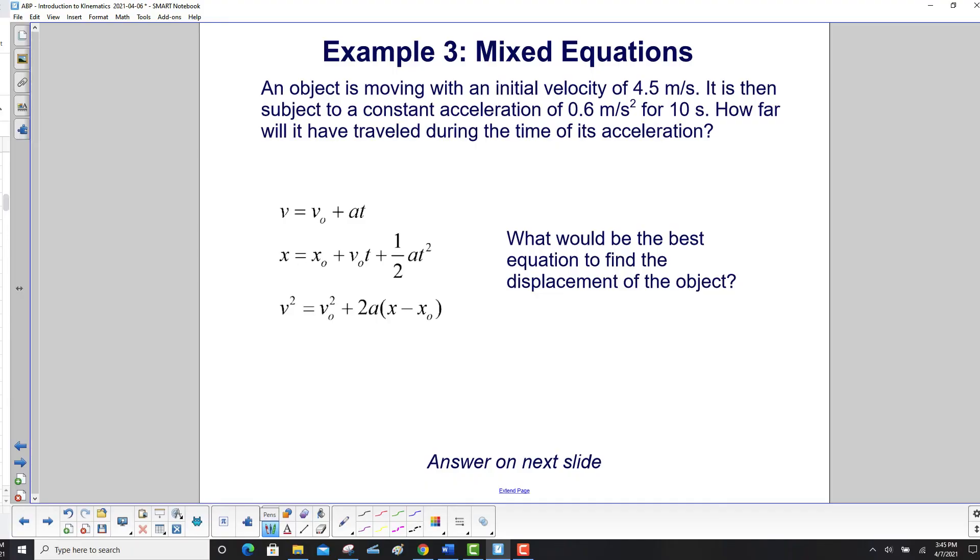An object is moving with an initial velocity of 4.5 meters per second. It is subject to a constant acceleration of 0.6 meters per second squared for a time of 10 seconds. How far, or what is its displacement, during the time of its acceleration? So which one of these would be the best equation to find the displacement of the object?